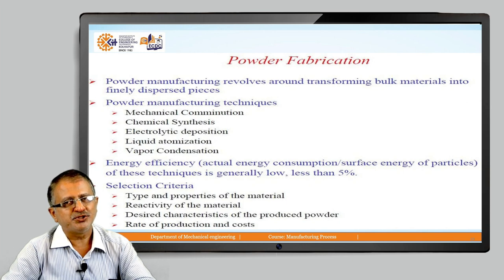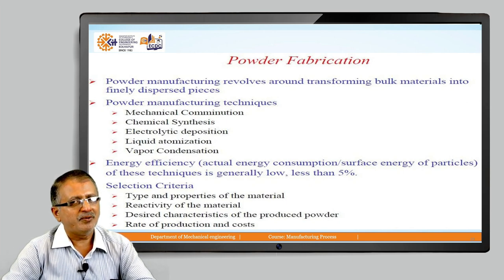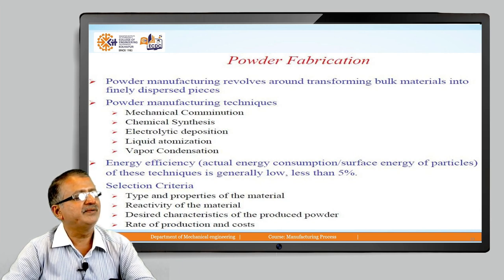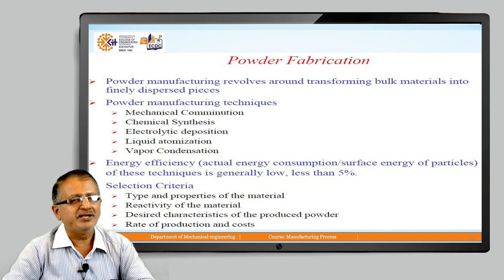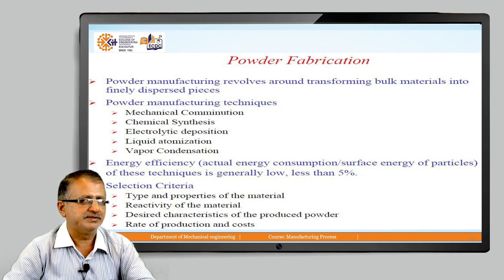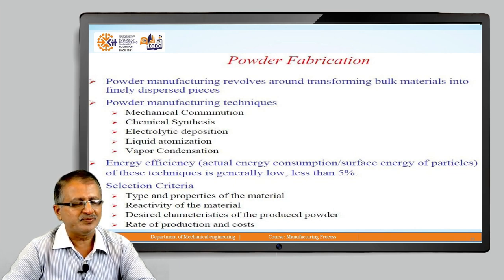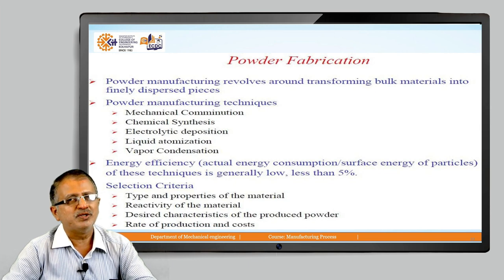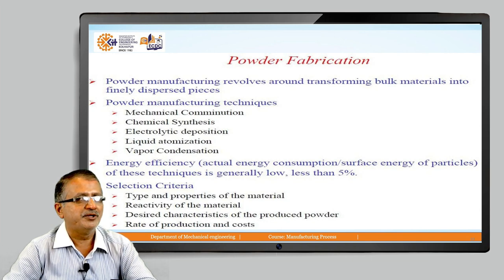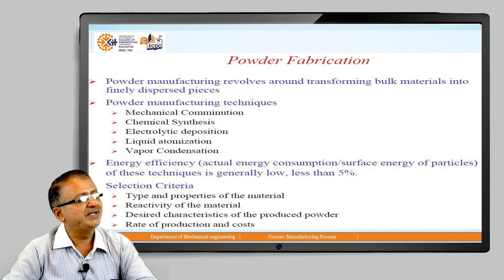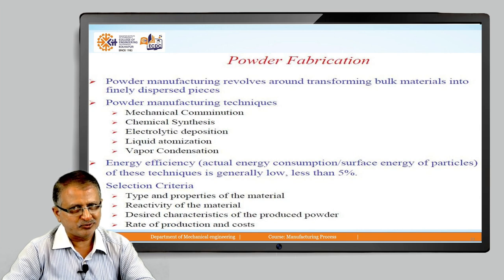After understanding size, shape and distribution, we move to powder fabrication. Powder can be produced using many techniques: mechanical techniques, chemical synthesis, electrolytic deposition, liquid atomization, and vapor condensation. Each method has its own unique features as well as limitations. Energy efficiency is also important while producing powder particles. The selection of a particular method depends on criteria such as: type and properties of the metal required, reactivity of the metal, desired characteristics of the powder produced, and production cost including rate of production and cost per kg.